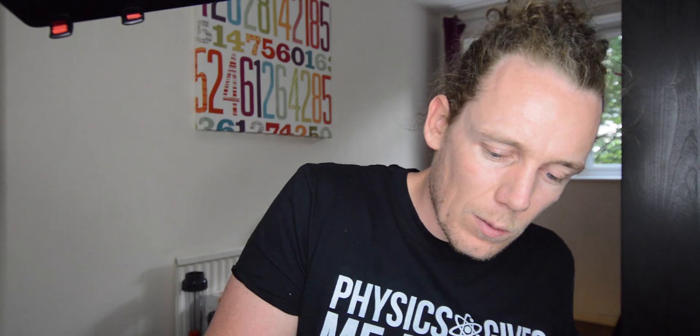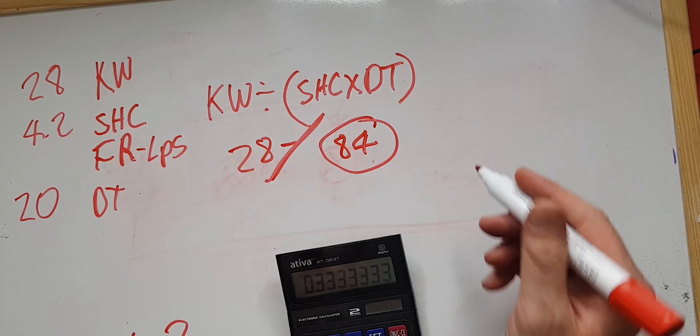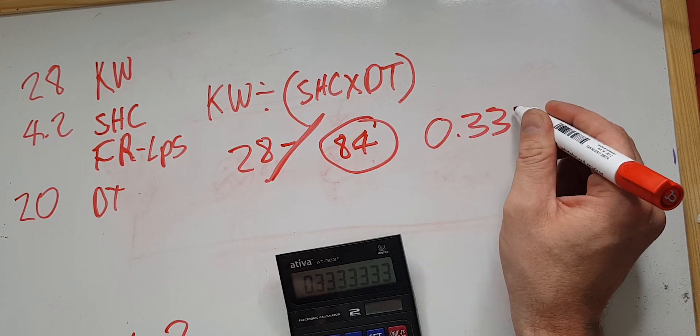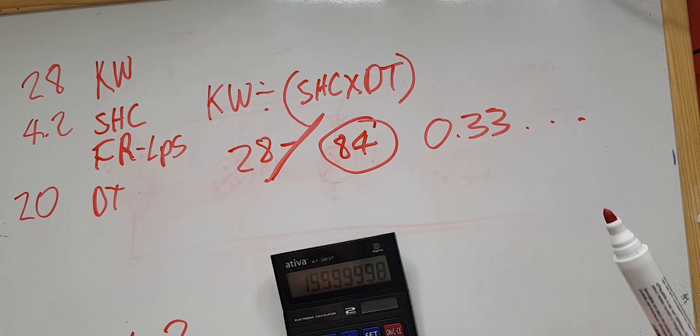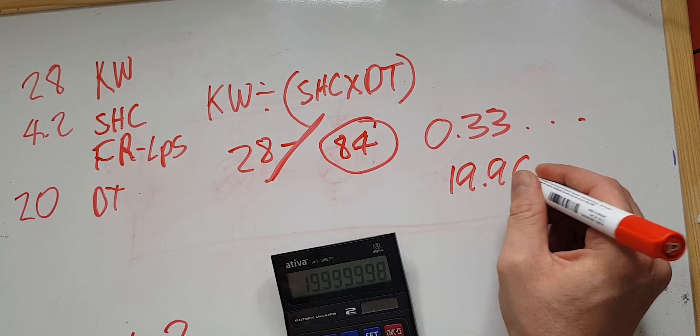So 28 kilowatts divided by 84 — 28 divided by 84 equals 0.33 recurring. That's a difficult number to sort of comprehend, so I normally multiply by 60, which puts it into liters per minute, which equals 20 liters a minute.